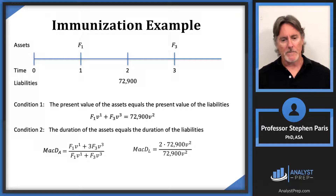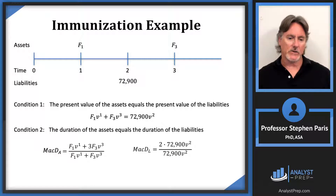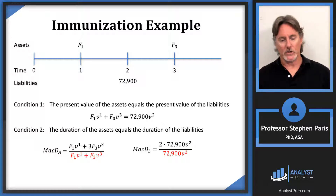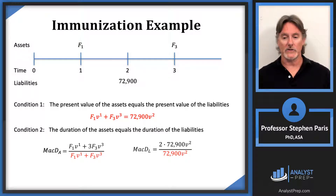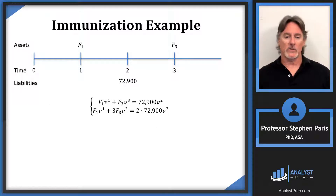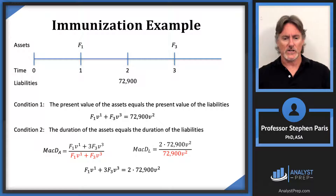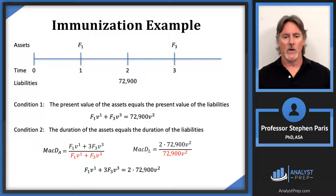Because of condition one, the present value of the assets equals the present value of the liabilities, and these appear in the denominators of both Macaulay duration expressions. Since the denominators are equal, setting the durations equal simply means setting the numerators equal: 1·F1·V + 3·F3·V³ = 2·72,900·V². This is the condition-two equation that appears in every immunization problem.